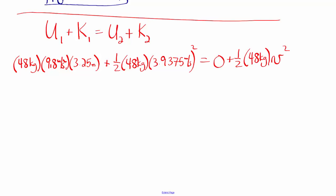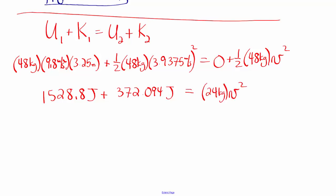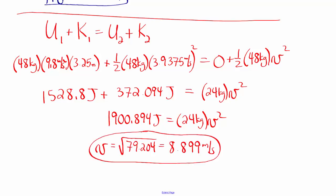Using conservation of energy, the initial potential energy is 1,528.8 joules and the initial kinetic energy is 372.094 joules. These must equal the final kinetic energy, which is 0.5 times 48 times v squared, or 24v squared. Adding the initial energies: 1,900.894 joules equals 24v squared. Solving, v equals the square root of 79.204, which is 8.899 meters per second — the speed of Avery and the sled when they reach her brother.